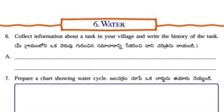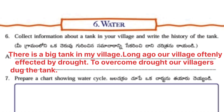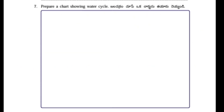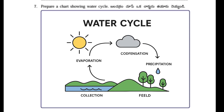Next, sixth one: Collect information about a tank in your village and write the history of the tank. Answer: There is a big tank in my village. Long ago our village was often affected by drought. Next: Prepare a chart showing the water cycle. Here I have given a water cycle chart.